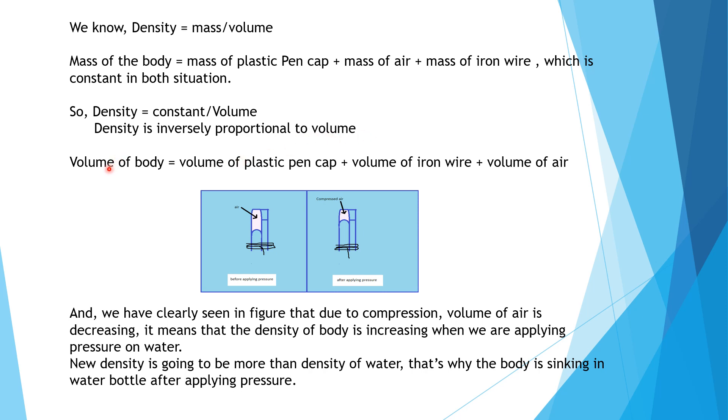And now volume of body is equal to volume of plastic pen cap plus volume of iron wire plus volume of air. And now we can see in the figure that volume of air is decreasing, which means volume of body is decreasing. And we know that if volume is decreasing, so density will increase because density is inversely proportional to volume.